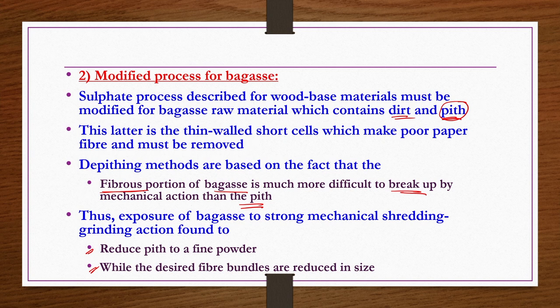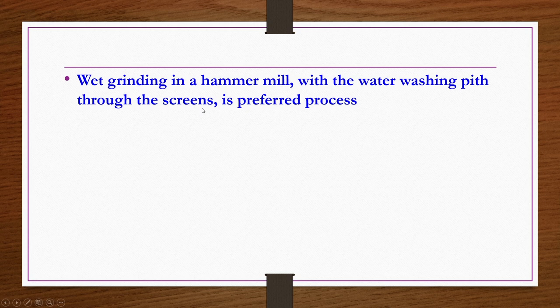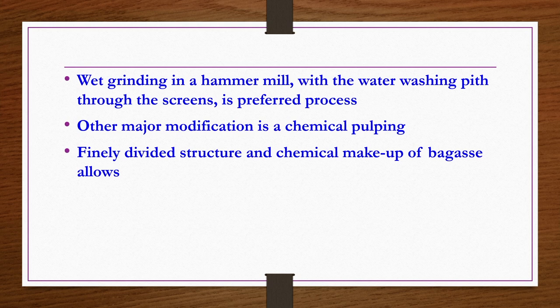The other major modification for bagasse is in chemical pulping. The finely divided structure and chemical makeup of bagasse allows rapid penetration and reaction by alkaline pulping materials. Thus, only five minutes in the digester is sufficient, providing a basis for high throughput continuous digestion.